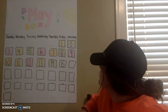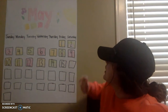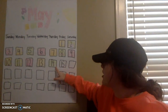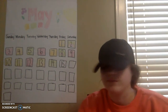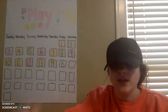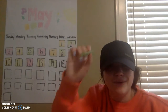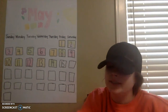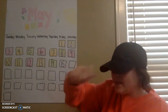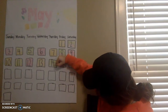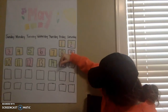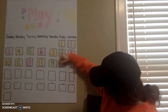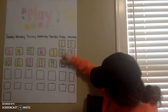Now let's look at our colors. Our pattern is yellow, green, pink — and yesterday we had the color green. So what color is Miss Sarah going to use today? Yellow? No. Am I going to use green again? What about pink? Very good.